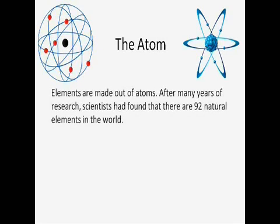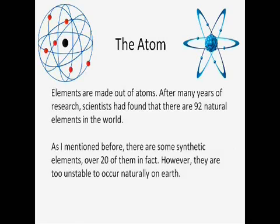Elements are made out of atoms. After many years of research, scientists have found that there are 92 natural elements in the world. As I mentioned before, there are some synthetic elements. Over 20 of them, in fact. However, they are too unstable to occur naturally on Earth.